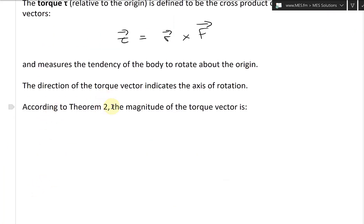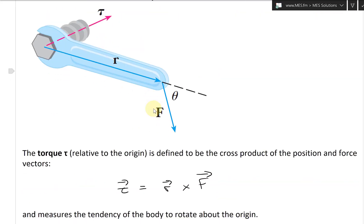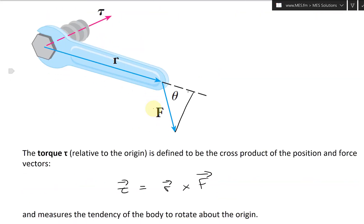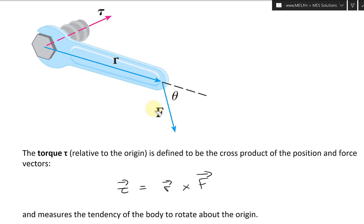And then according to theorem two, the magnitude of the torque vector is, the absolute value or the length or the magnitude of the torque, is equal to the magnitude of the cross product of r cross F, which equals to the magnitude of both position vector and the force vector, and then sine theta. So there's that sine theta across here, pointing downwards.